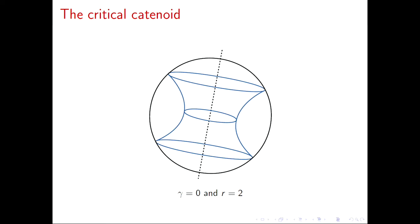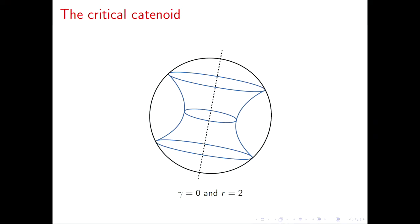The next example is the so-called critical catenoid. The catenoid is the only minimal surface of revolution, and it turns out that there is only one way to fit it inside a ball so that the free boundary condition is met — so that we see an orthogonal intersection. None of the pictures I'm showing are mathematically accurate; I drew them myself just to give an idea of how they look.